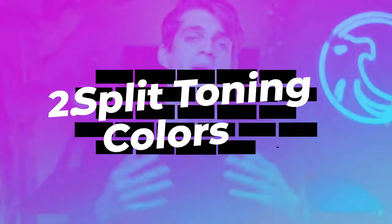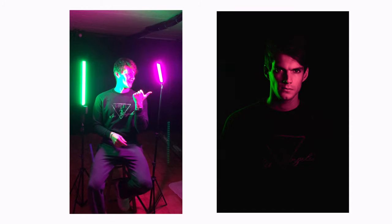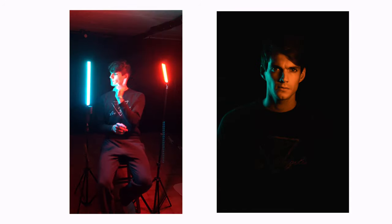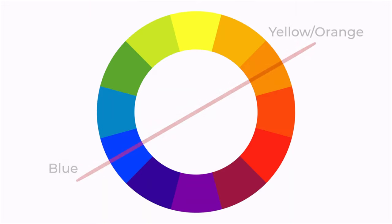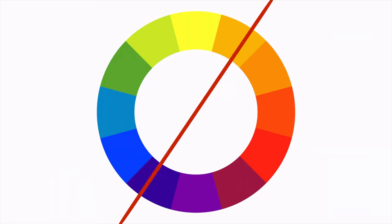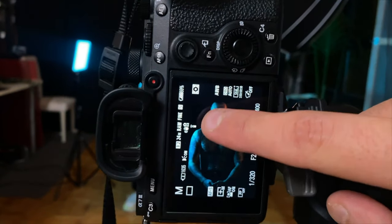The second idea is about split toning with colors. The way it works is that you just need two different RGB lights, one on the right and one on the left, each a different color. The best way to pick colors is using the color wheel — you can pick contrasting colors like yellow and blue, or magenta and green. Then just play with different colors and see how the results turn out.